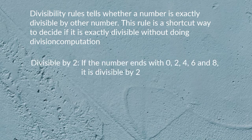Divisible by 2: if the number ends with 0, 2, 4, 6, or 8, it is divisible by 2.